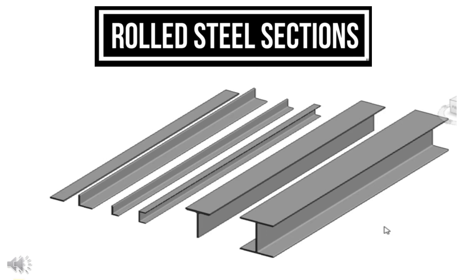There is a plate section first, then a channel section, a T-section, and an I-section — making six sections in total. These are basically rolled steel sections. Every rolled steel section is cast as a single piece. We cannot separate these sections.